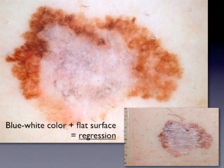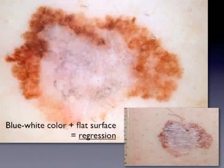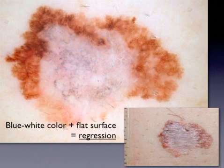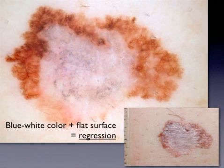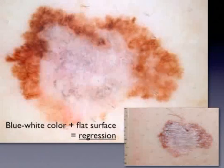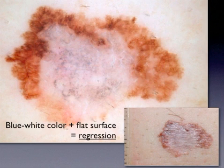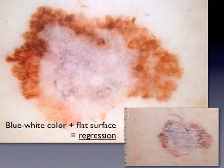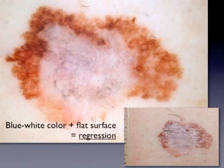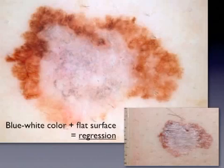In this melanoma, the most striking feature is the large area composed of blue pepper-like granules over a white scar-like background, corresponding in histopathology to melanophages and fibrosis respectively. Scar-like areas are usually whiter than the surrounding skin and usually correspond to a clinically flat portion of the lesion.